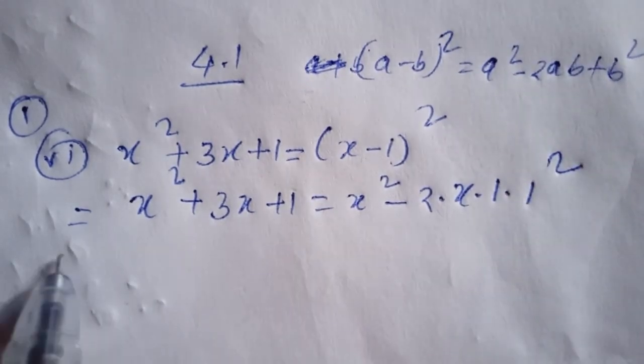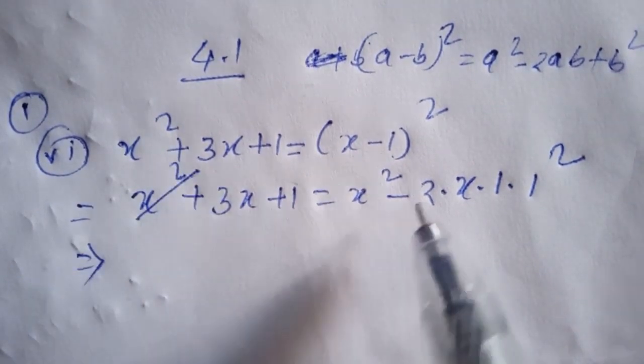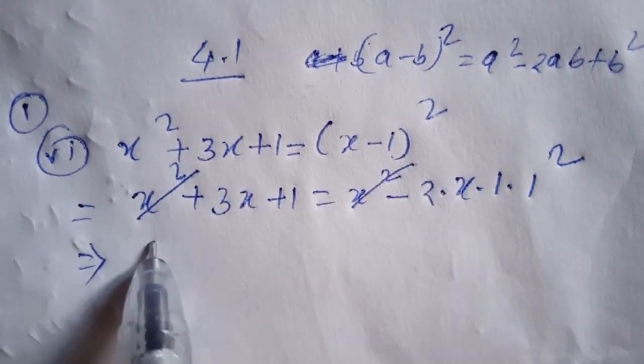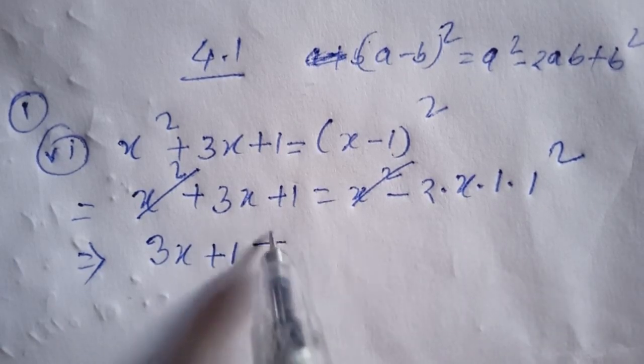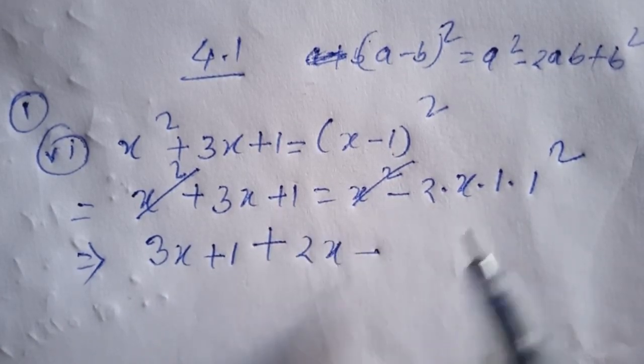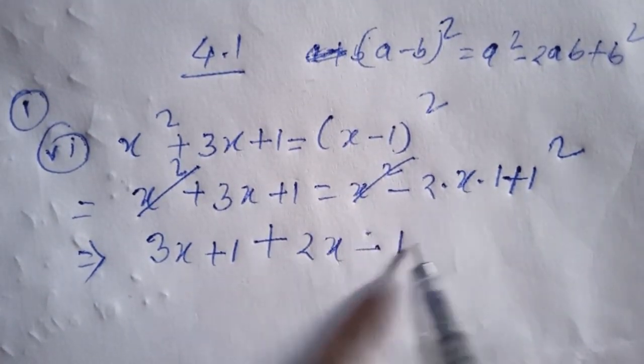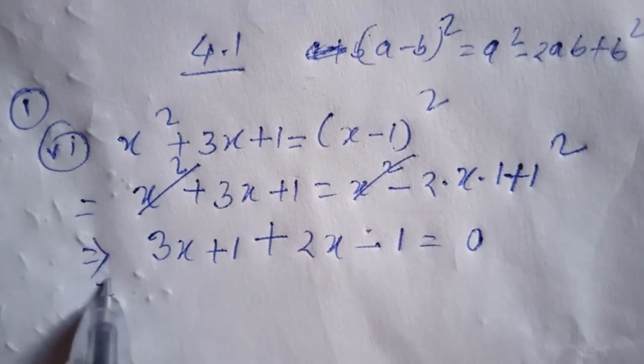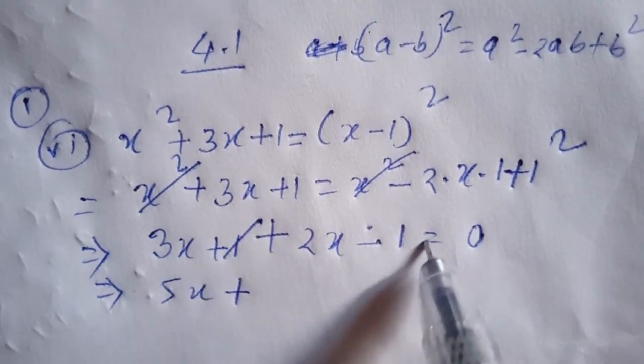We have x squared plus 3x plus 1 on the left. The x squared terms cancel. We get 3x plus 1 minus negative 2x minus 1, which gives us 5x plus 2 equals 0.